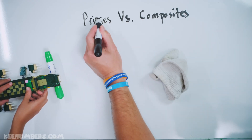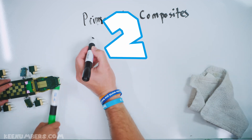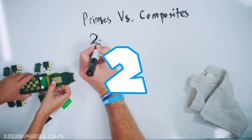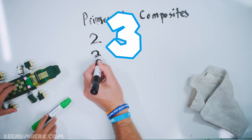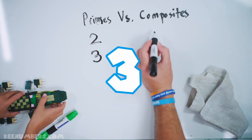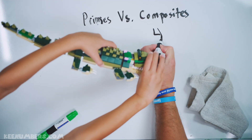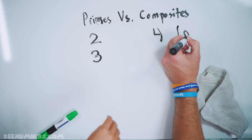Let's look at some examples. Primes: two, three. But not four — four is a composite. It is not prime.